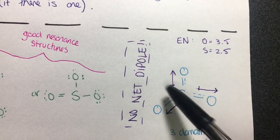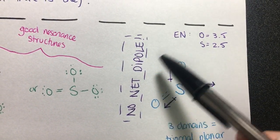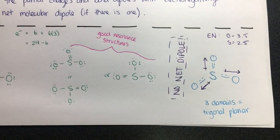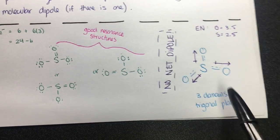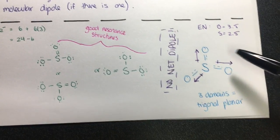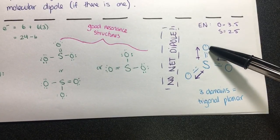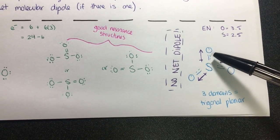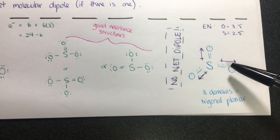However, since this molecule is trigonal planar, all of the dipoles cancel each other out and there is no net dipole. It's important to point out that this molecule is not polar because all of the domains are the same, so all of the dipoles are equal. If one of these atoms were something different, like another sulfur, then the molecule would be polar because the dipoles wouldn't be the same.